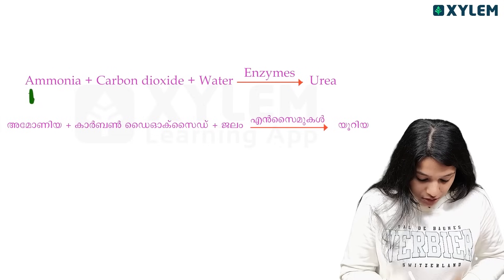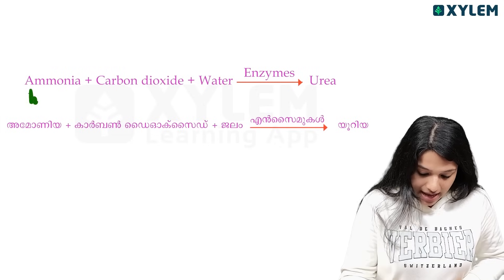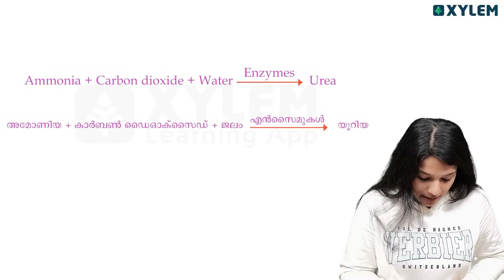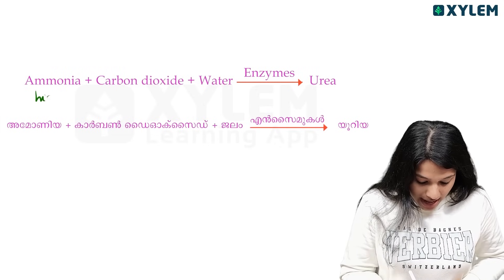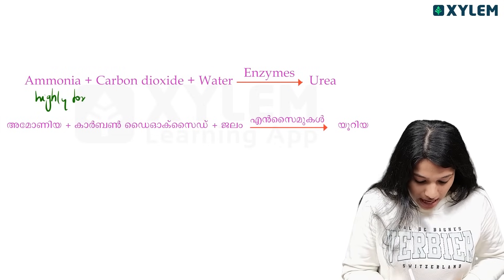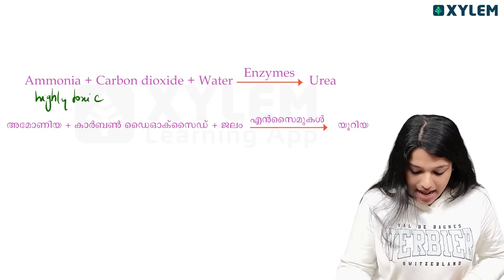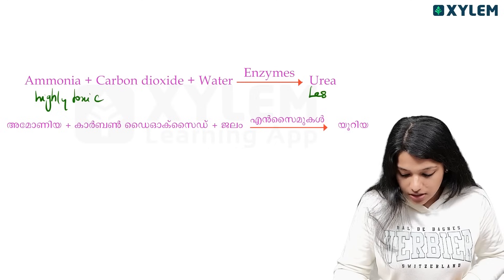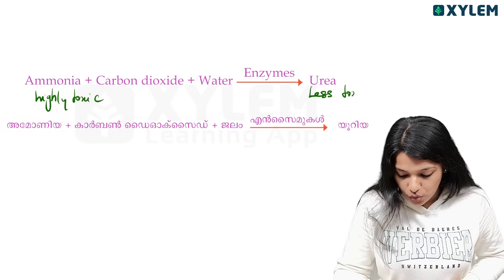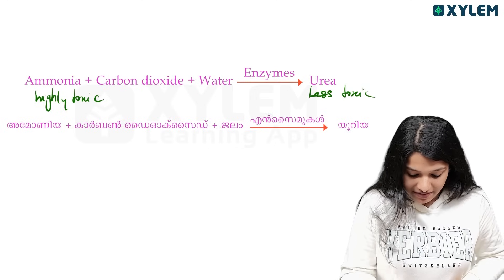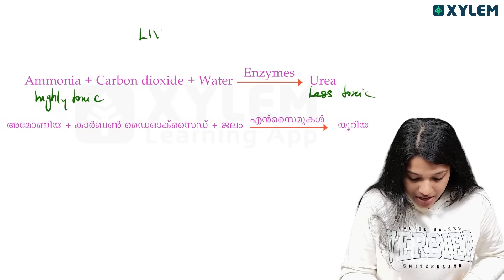Ammonia is highly toxic. Ammonia is converted to a less toxic form. The liver is responsible for this conversion of ammonia.